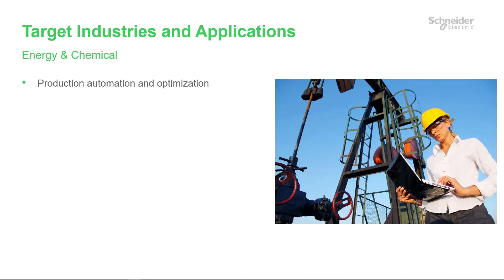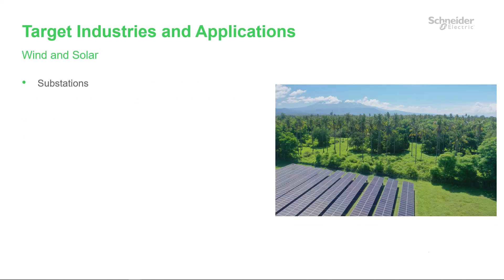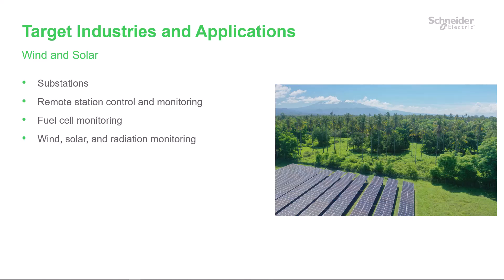In the energy and chemical sector, you can use Aero for production automation and optimization, automation of wellheads, pipelines, batteries, and tanks, leak detection including negative pressure wave calculations, as well as production and wellhead analytics at the edge. In the wind and solar industry, you can use Aero at substations for remote station control and monitoring, fuel cell monitoring, as well as monitoring of wind, solar, and radiation installations, and for meteorological analytics.